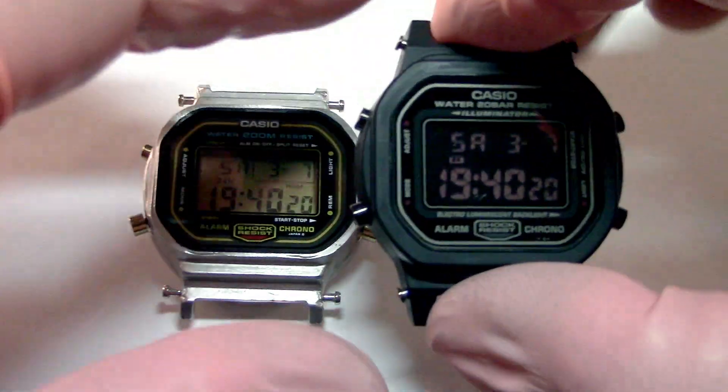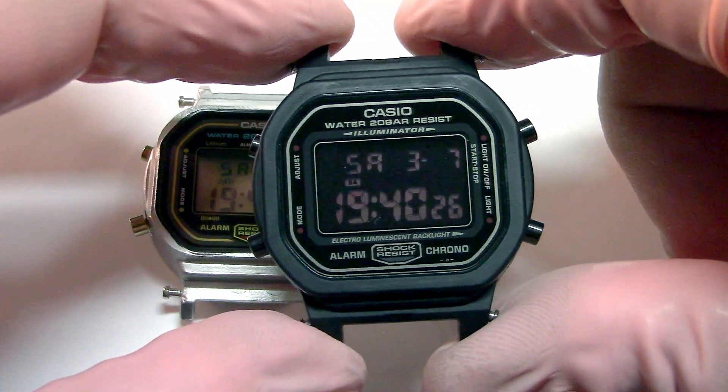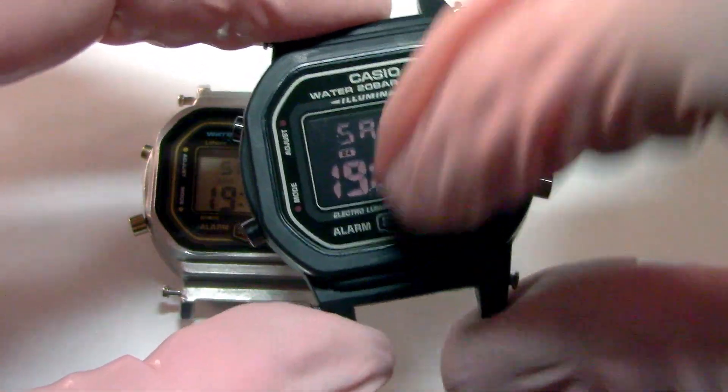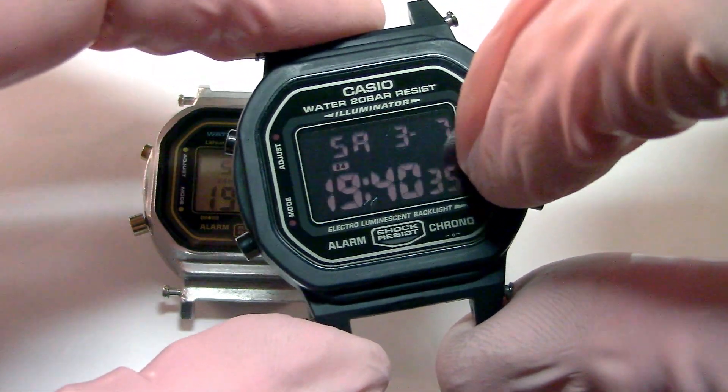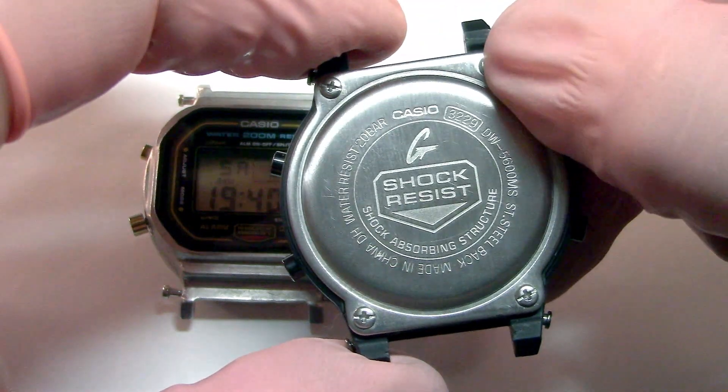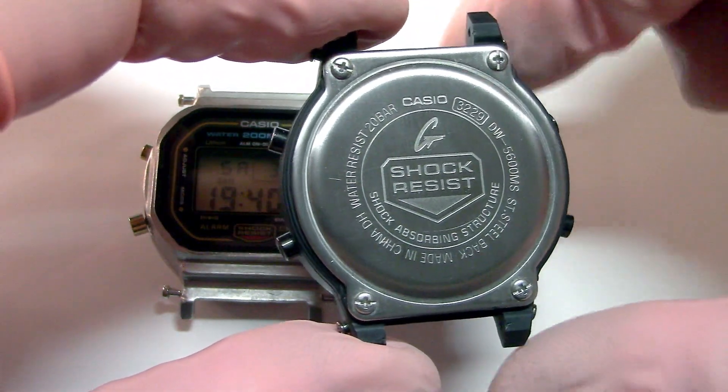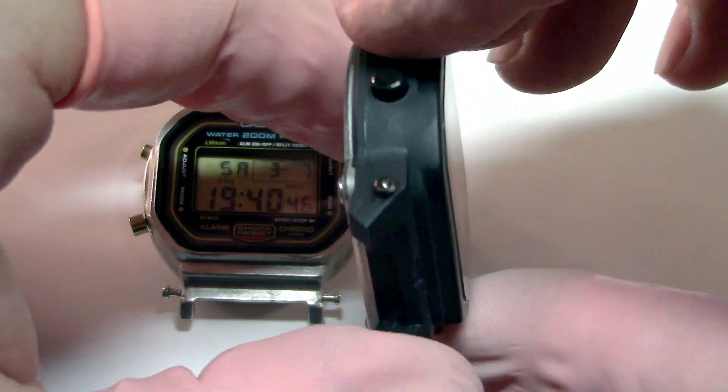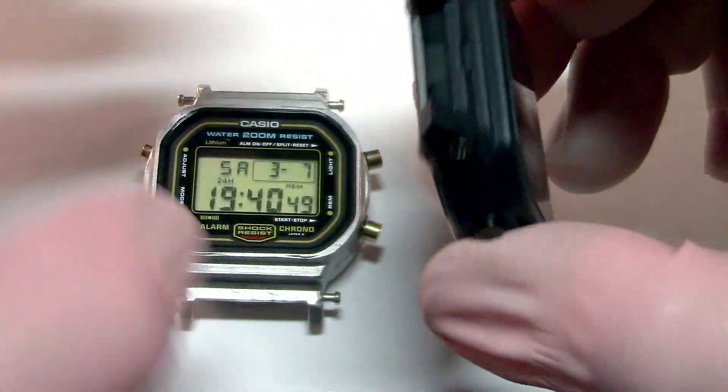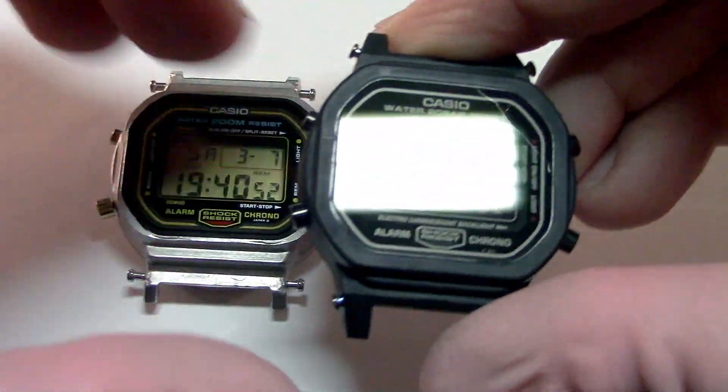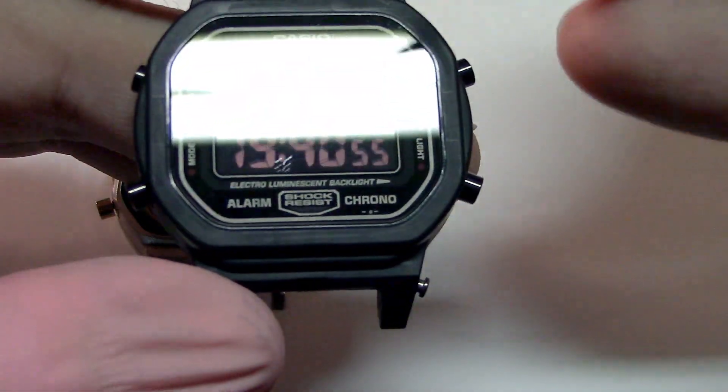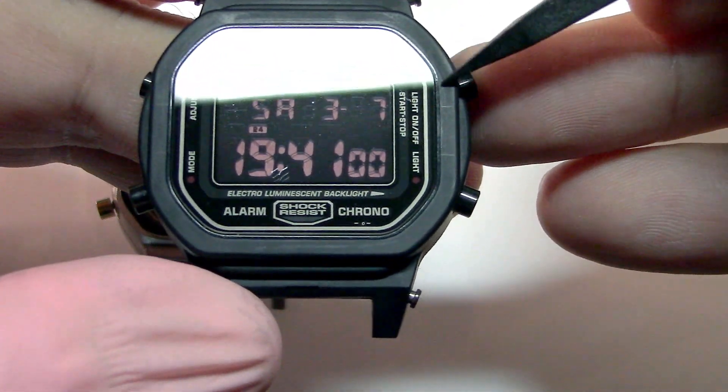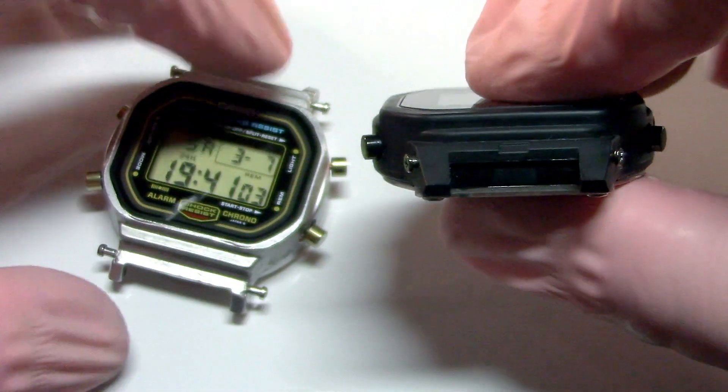And this one is from the 2010s. I purchased this in 2013. I chose this one with the inverted or negative LCD. And it uses the 3229 module. And as you can see, the case is made of plastic. And the construction is really similar. This one also uses a plastic gasket to fix the crystal. The construction is pretty similar.